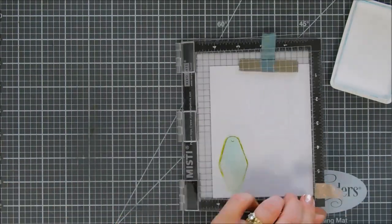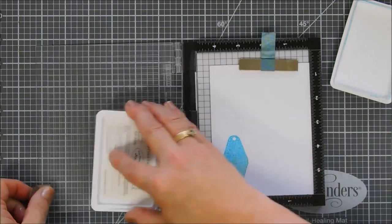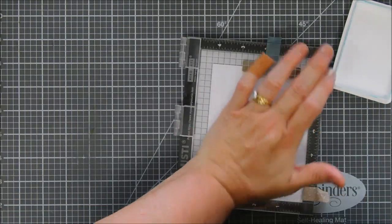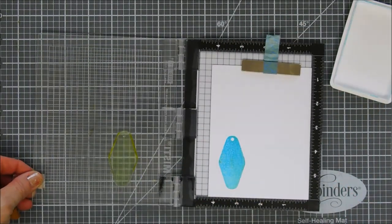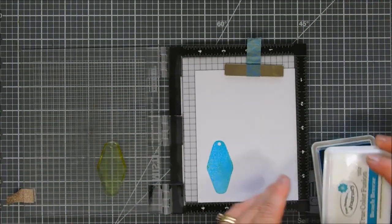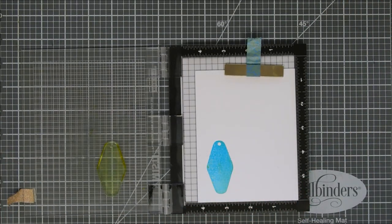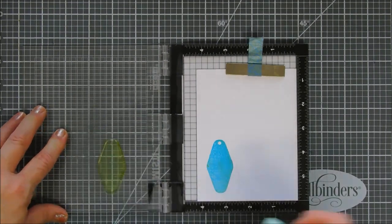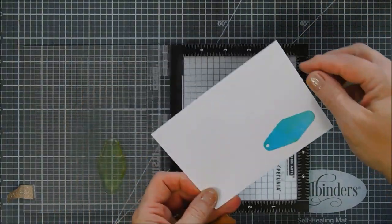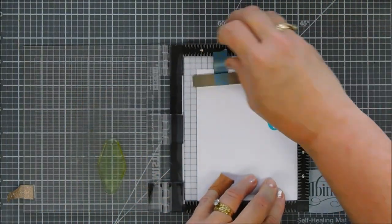We're going to start off by creating a colorful background using some inks. These are the Fun Stamper's Journey True Color Fusion inks and this is Beach Breeze for our first background color. Now this keychain is a layering keychain. There's a few elements to it. You have the background piece and then you also have the top piece you can stamp.